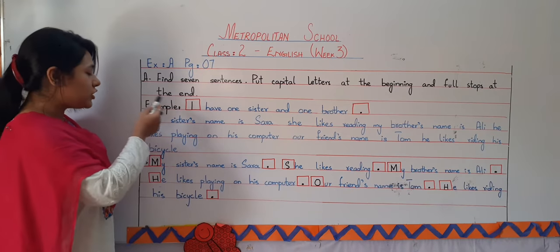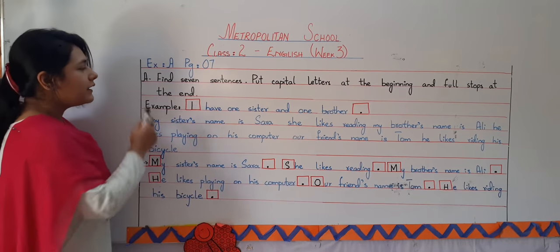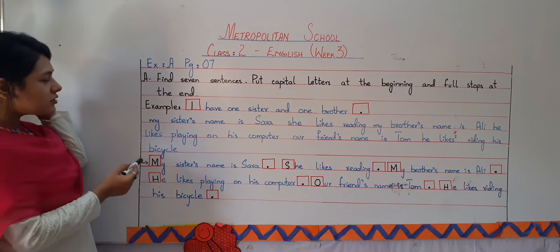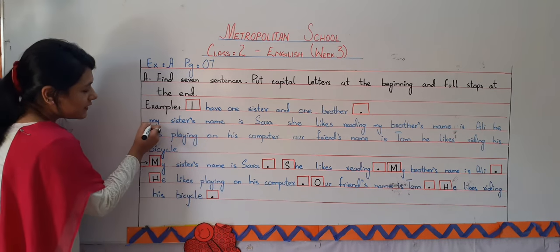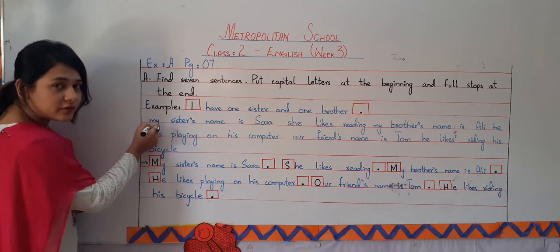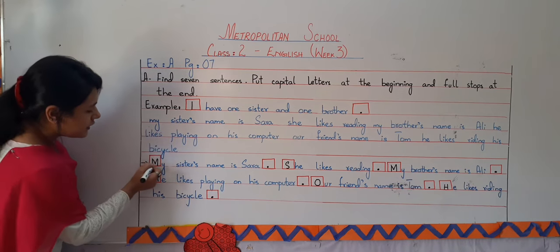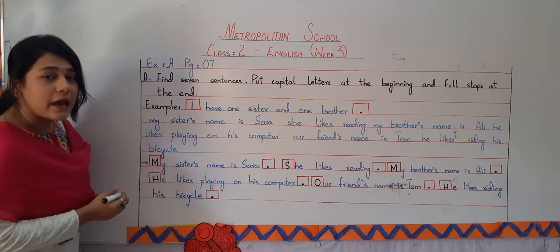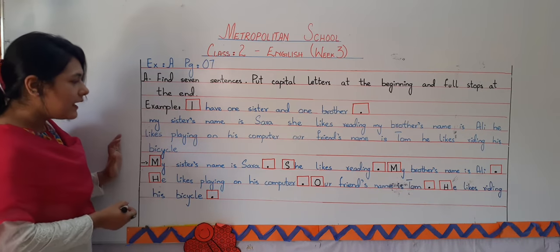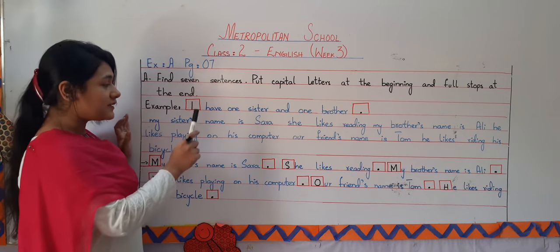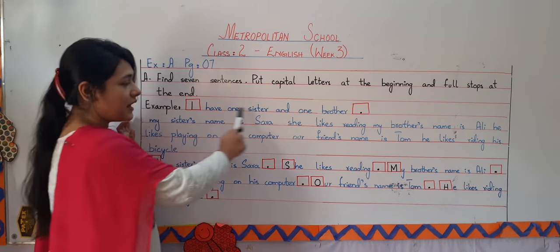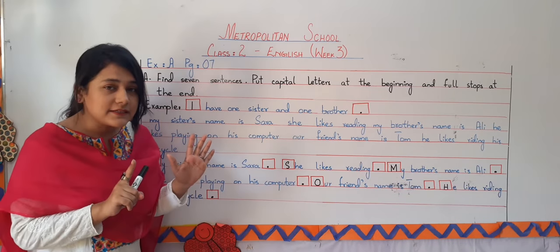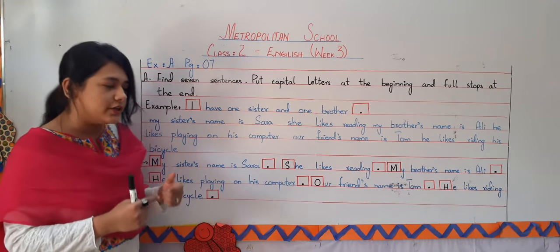We have completed reading the paragraph. Now we have to change it. This is the very first alphabet of the sentence, so we have turned it into capital M. The very first sentence is done by the book, so we have to find six sentences and then change them.